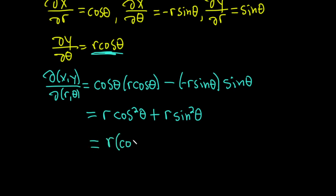And this is a famous trigonometric identity, right? If you take cosine squared plus sine squared, that's going to be equal to one. So this is r times one, which is equal to r. And that would be the Jacobian.